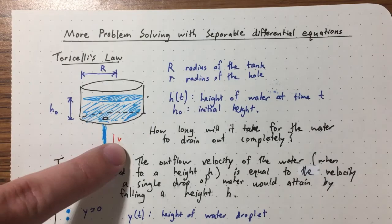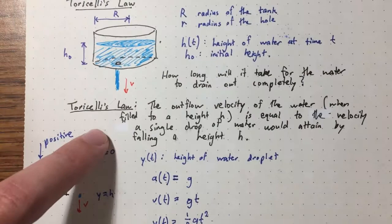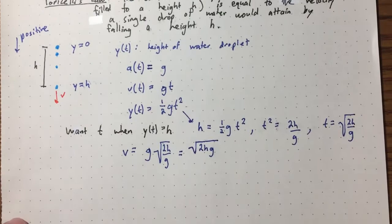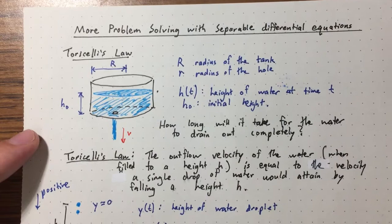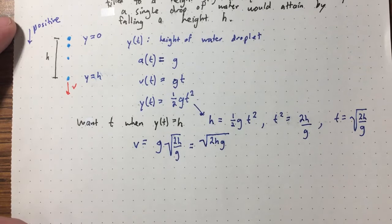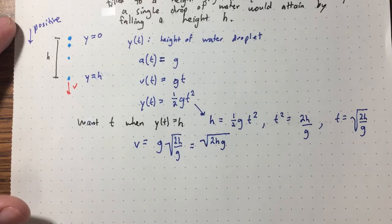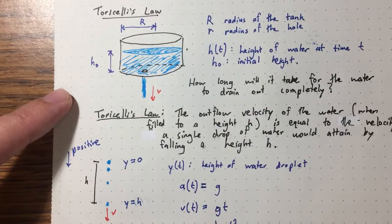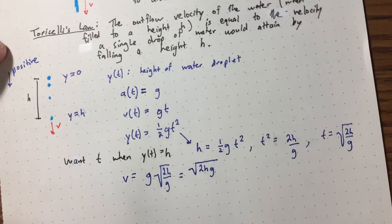Going back to our original problem: we figured out that the outflow velocity v = √(2hg) by Torricelli's law. We want to understand h(t). As we've seen several times, it's often easier to write a differential equation for h(t) — to say something about the rate of change — and then solve it to find h(t).